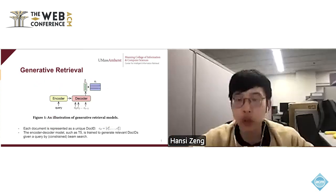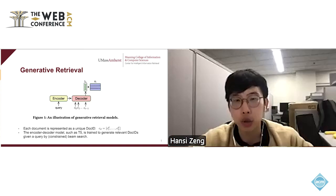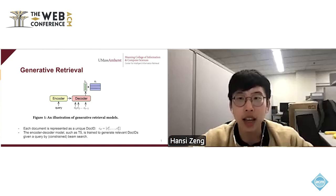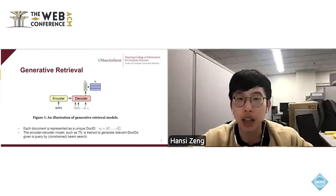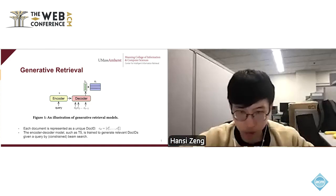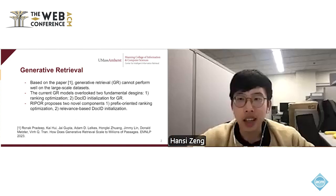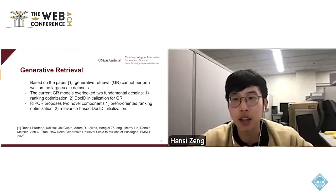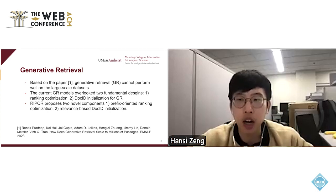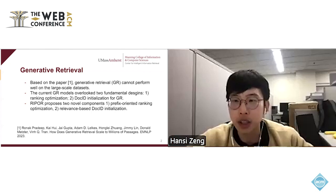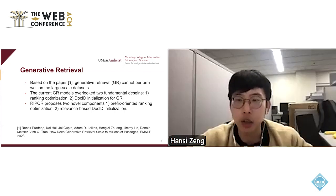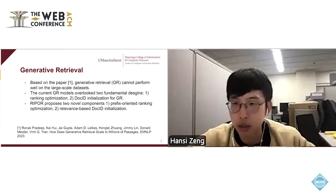First, I will introduce why we need generated retrieval. Generated retrieval is a new paradigm of document retrieval. It represents each document as a unique document identifier — a Document ID — and casts the retrieval task as a sequential generation task. The encoder-decoder is trained to generate relevant document IDs via constrained beam search. Although its elegant design offers potential benefits for end-to-end training with downstream NLP tasks such as open-domain question answering, generated retrieval's performance on large-scale IR datasets such as MS-MARCO — containing 8.8 million passages — still performs worse than state-of-the-art dense retrieval models.